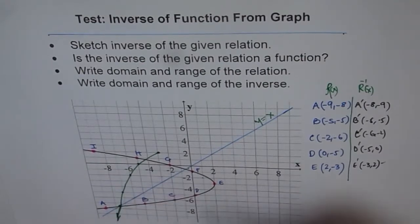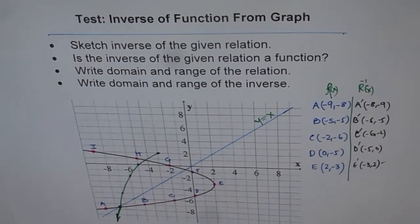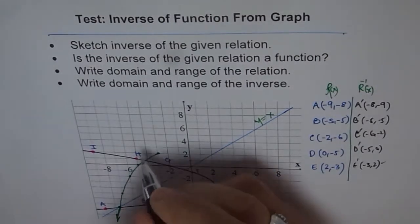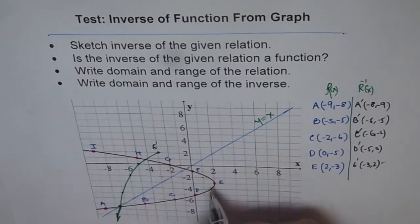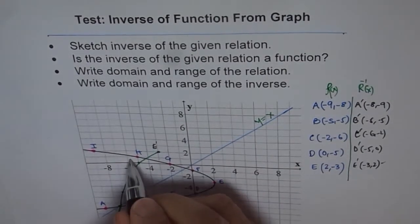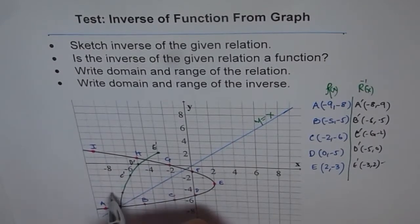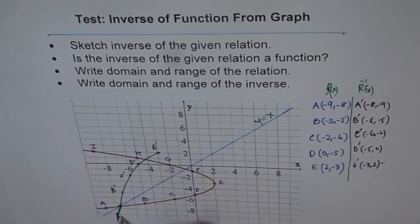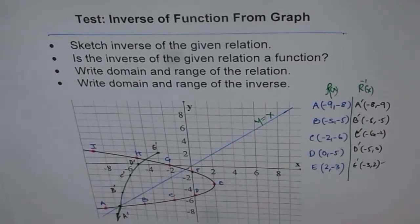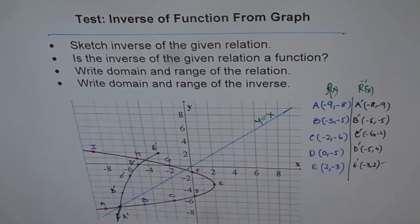So that forms your one half. And you can always write down which points you have taken. This is, for example, E dash for us. And then we have D dash for us. And then we have C dash. And this is B dash. And that one here is A dash. So likewise, you can draw the other half and get the solution for this thing.